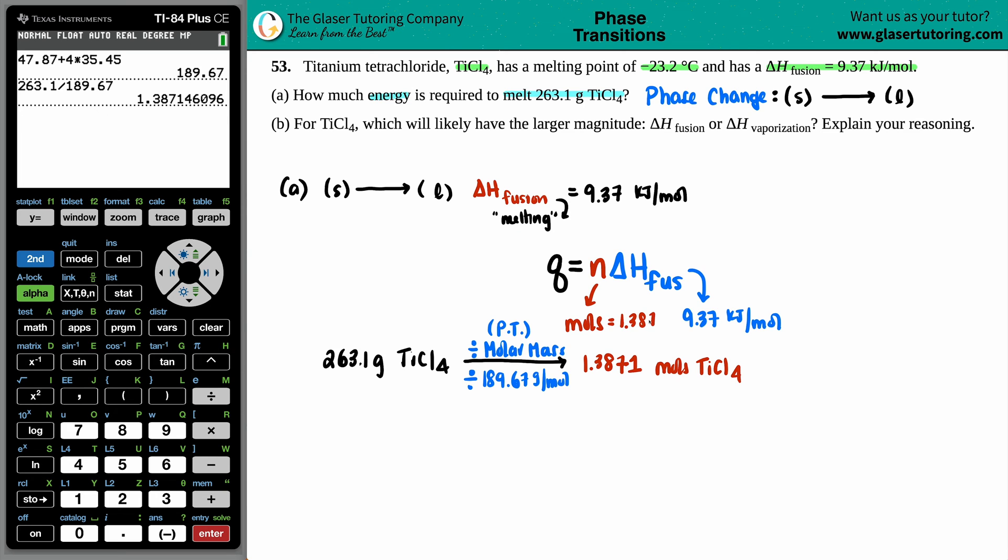We get 1.3871 moles of the TiCl4. So, 1.3871. Now, we're ready to go.